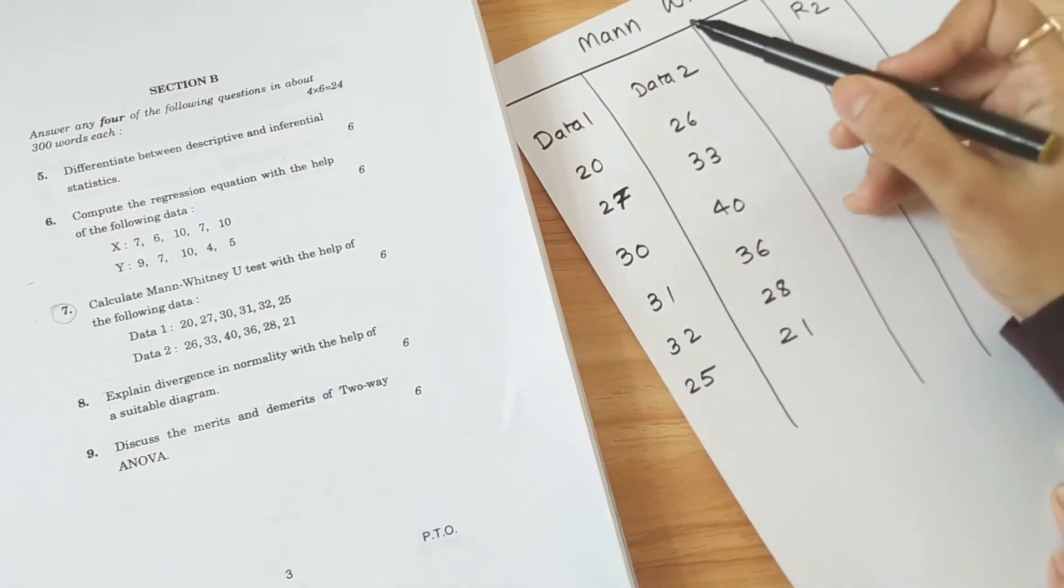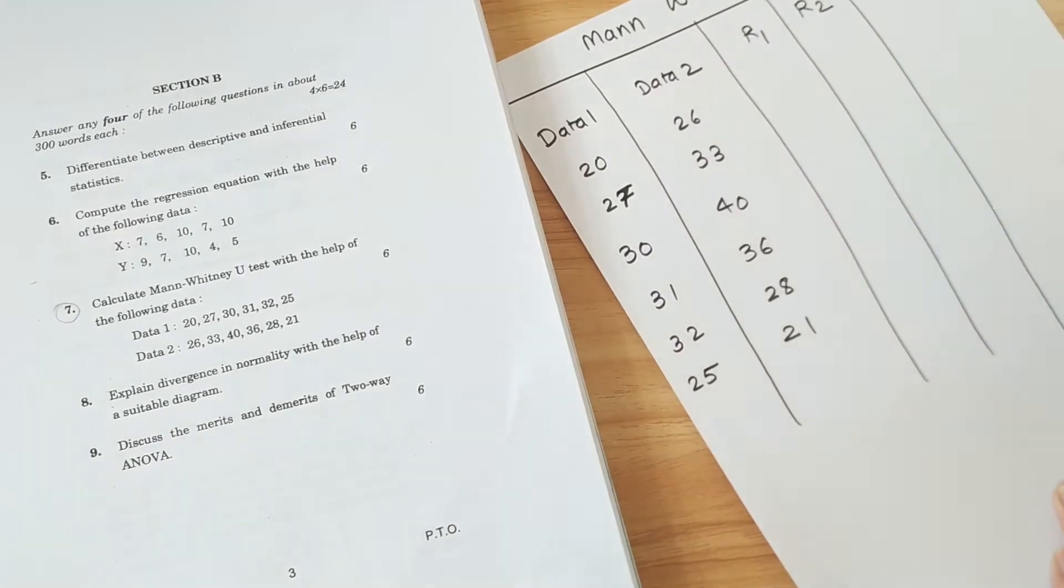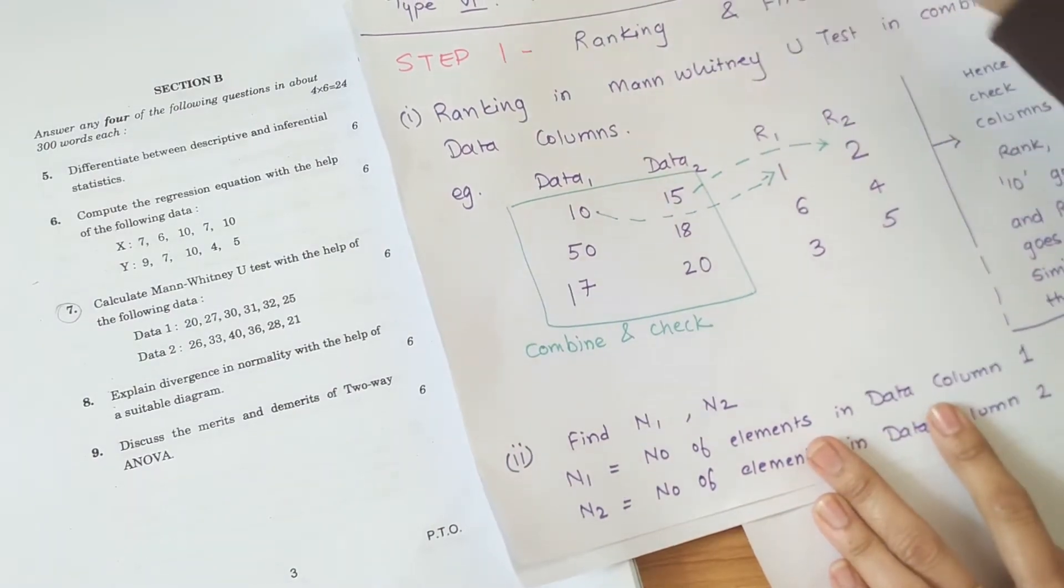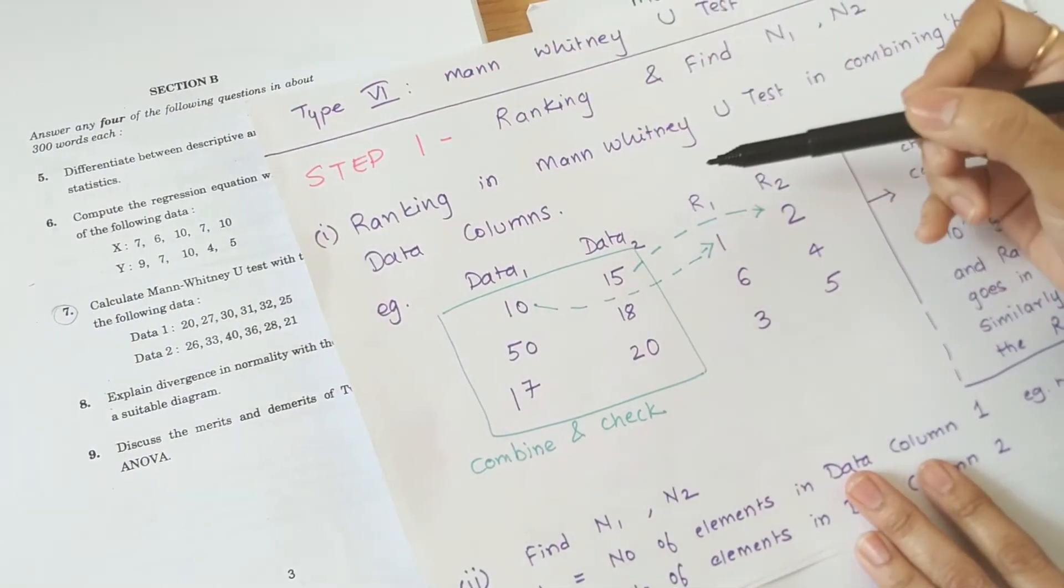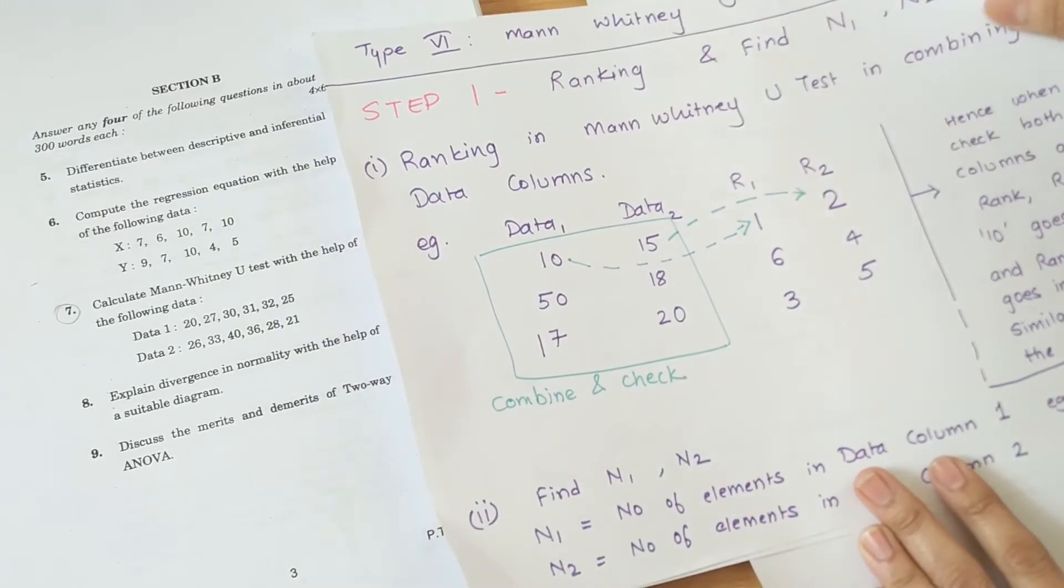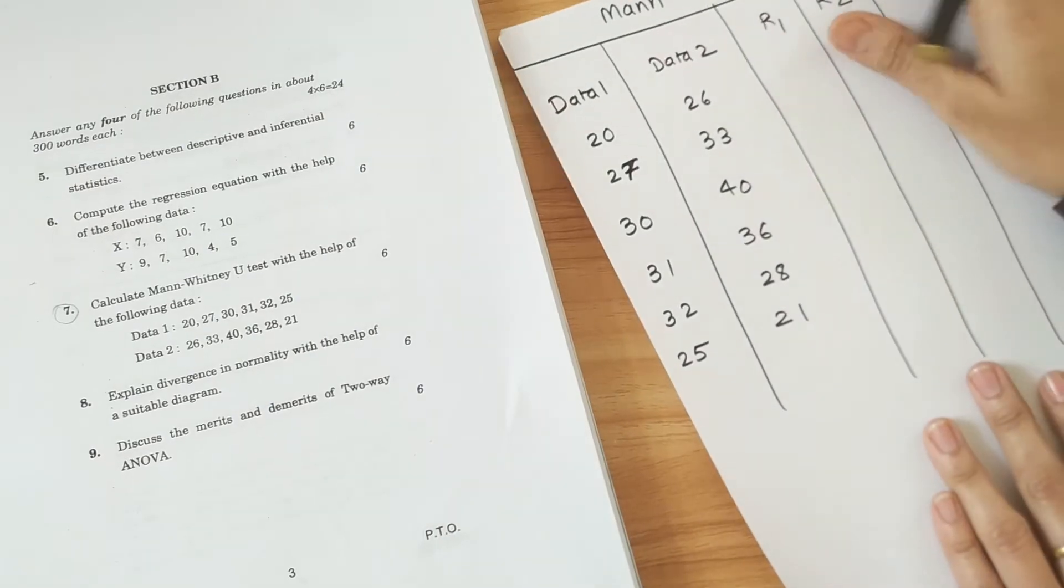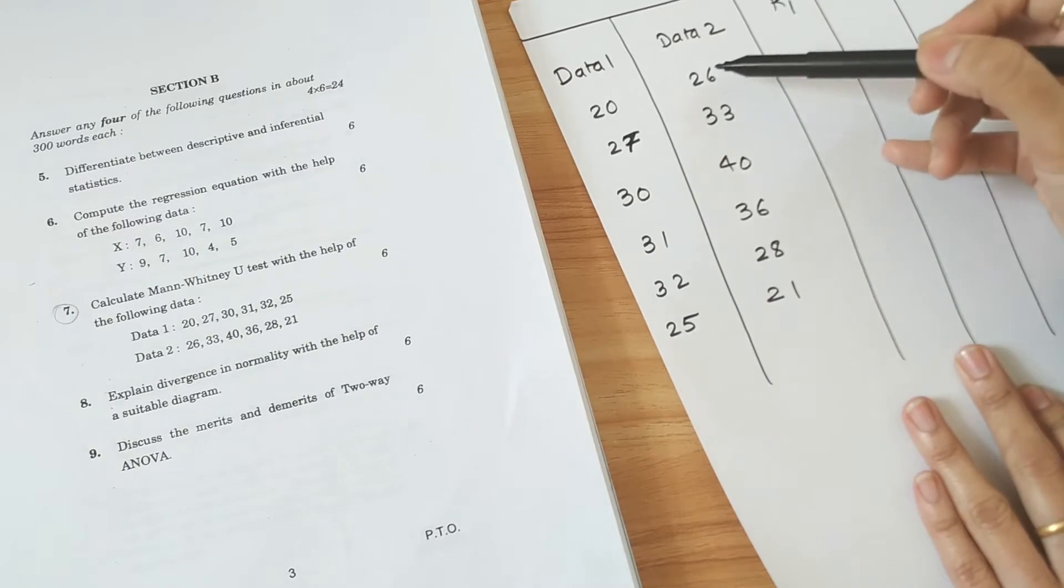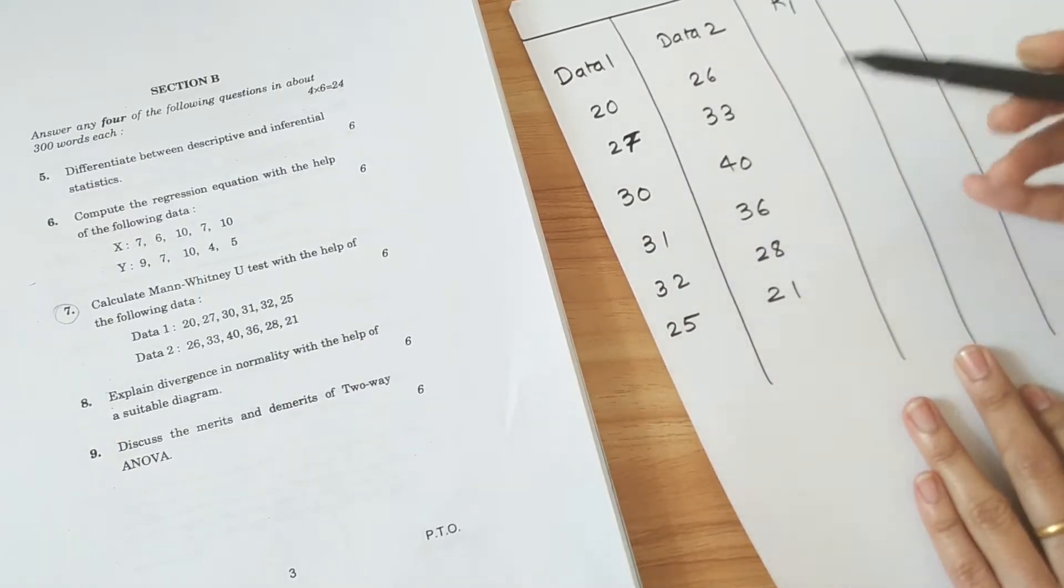Now we will rank. Now ranking in Mann-Whitney is by grouping. So you will see in the PDF ranking is by grouping both the columns. So it's not individual ranking. So ranking goes like 20 from here, 21 from here, considering both the elements.